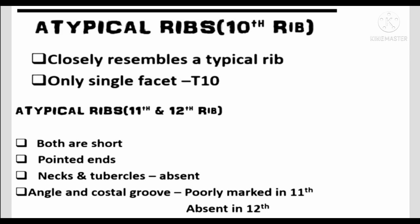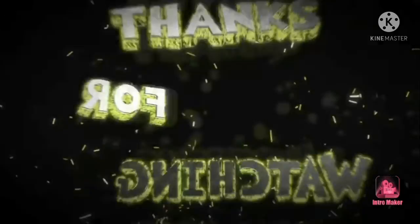Eleventh and twelfth atypical ribs: both are short with pointed ends. Neck and tubercle are absent. The angle and costal groove are poorly marked in the eleventh rib and absent in the twelfth rib.